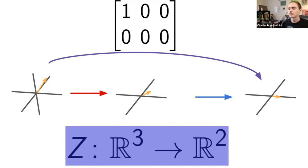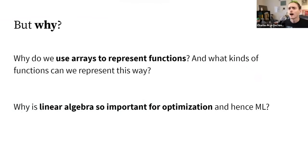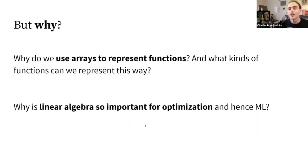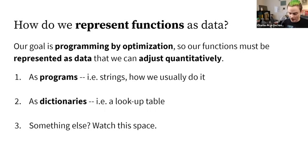That is the fundamental reason for the matrix multiplication rule: it ensures that multiplying two matrices gives a matrix that correctly represents their composition. This programming-like view of linear algebra is most fruitful for machine learning. But we still haven't tackled why this matters for machine learning specifically — we use arrays to represent functions and data, but why, and what kinds of functions can we represent?